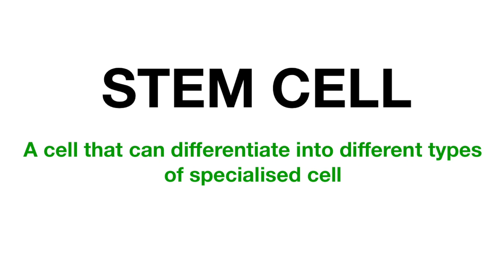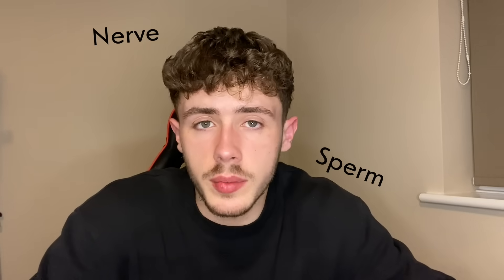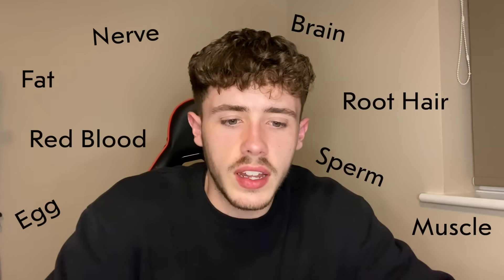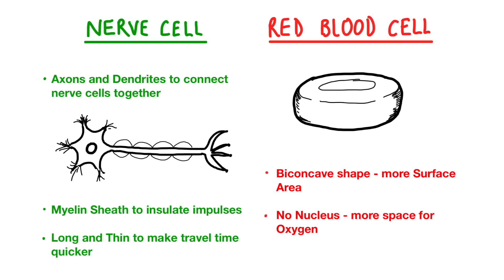Stem cells and specialised cells. A stem cell is an undifferentiated cell — all that means is that it is a cell that has the potential to transform into a specialised cell. Specialised cells consist of nerve cells, sperm cells, egg cells, brain cells, muscle cells — the list goes on. Each of those things are adapted to do a certain function. Here are a couple just as an example.